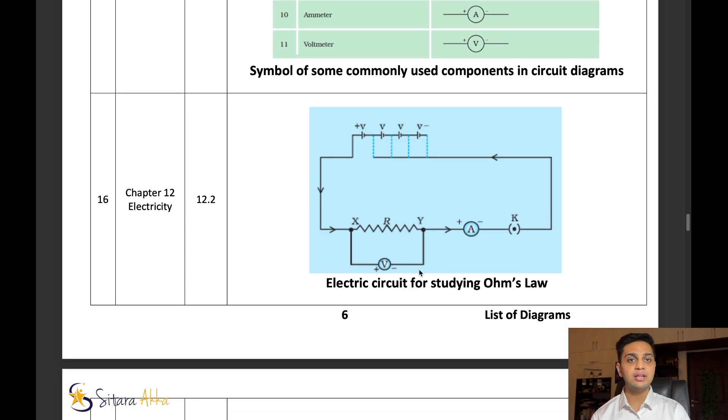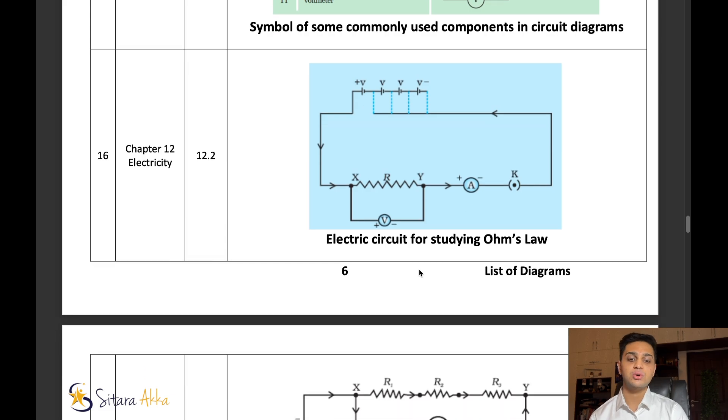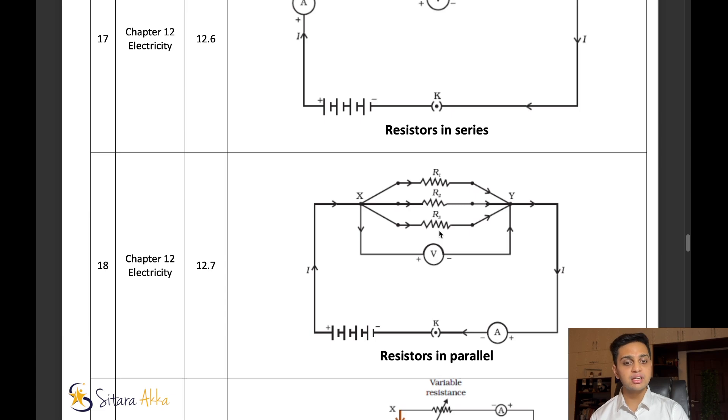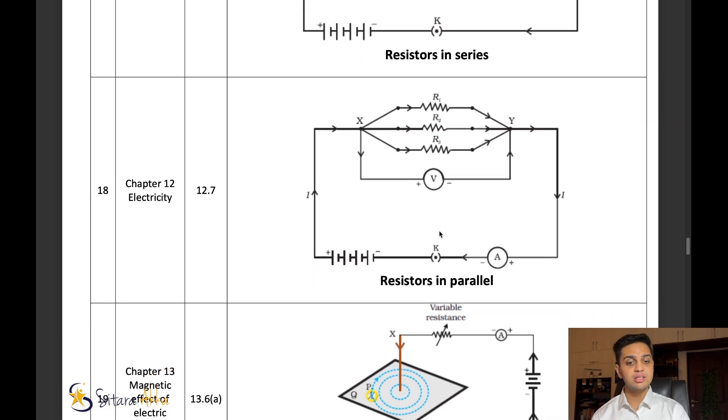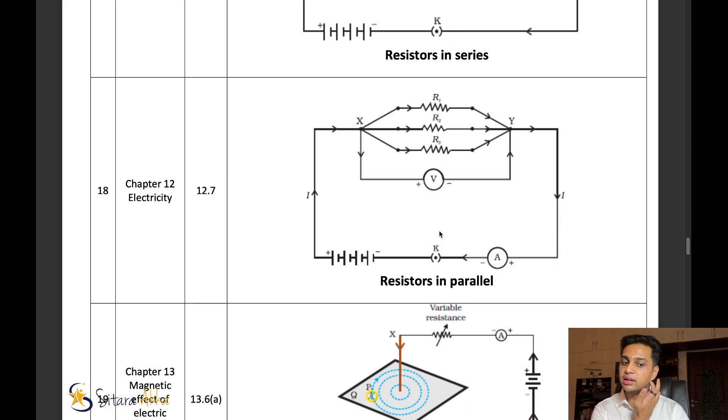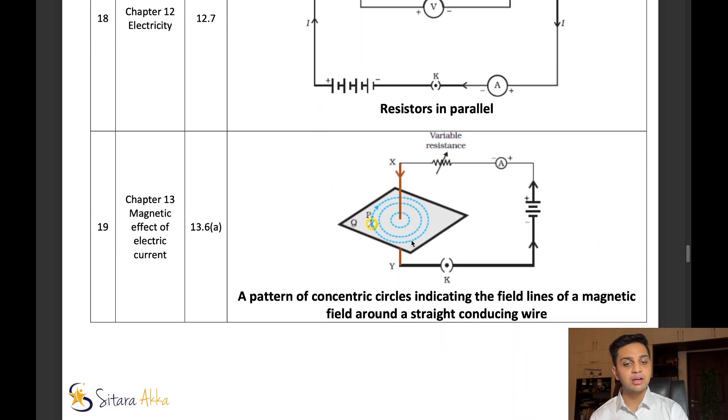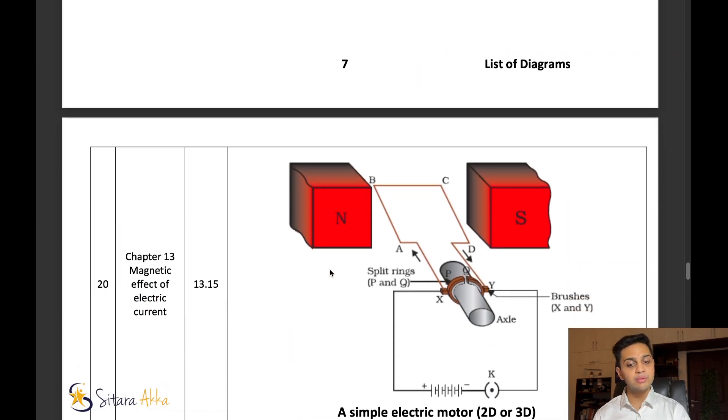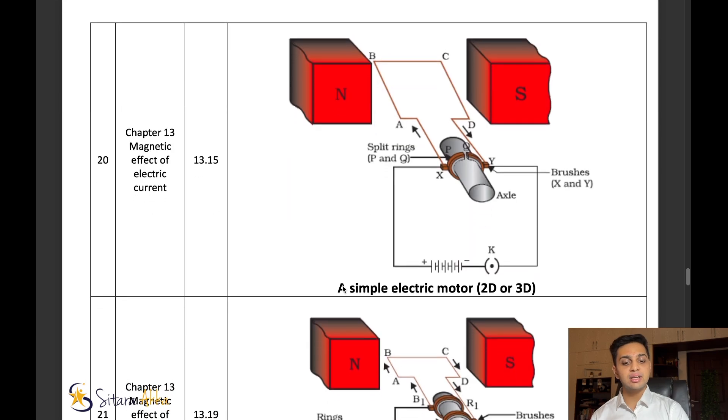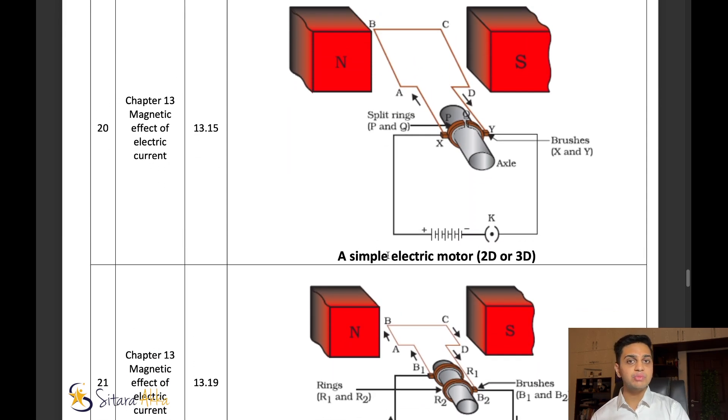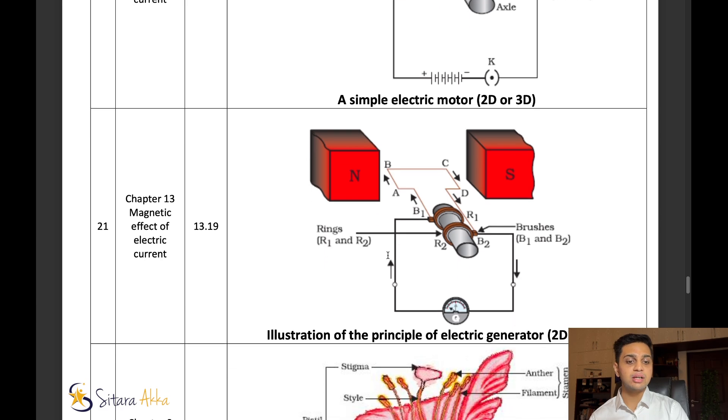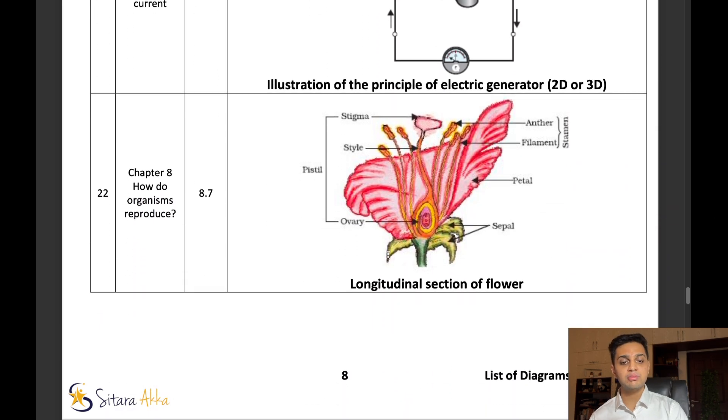Series resistors and parallel resistors are easy diagrams, but if you understand the concept, it becomes even more easier for you. Next chapter, magnetic effects of electric current. There are two very important diagrams. First one is going to be electric motor, and the next one is going to be electric generator. Electric motor converts electrical energy into mechanical energy, and electric generator converts mechanical energy into electrical energy.